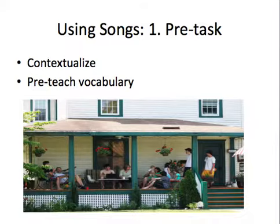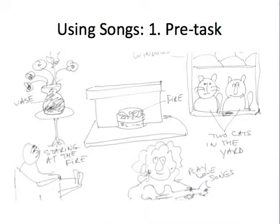I've got a picture there which we could use to suggest something about homes and what people like about them. Also in a pre-task, for this particular song 'Our House,' it describes a picture: the person who sings the song is staring at the fire, there's a vase with flowers, a fireplace, and they're staring at the fire while listening to the other person play love songs, with two cats in the yard looking through the window. So I can use that to elicit a lot of vocabulary and give students a visual image they can attach the language to.